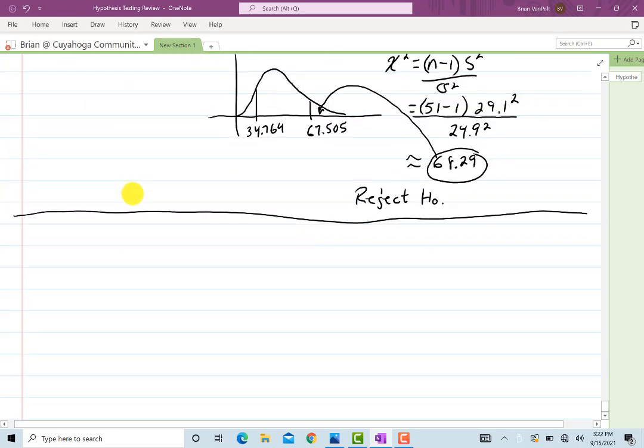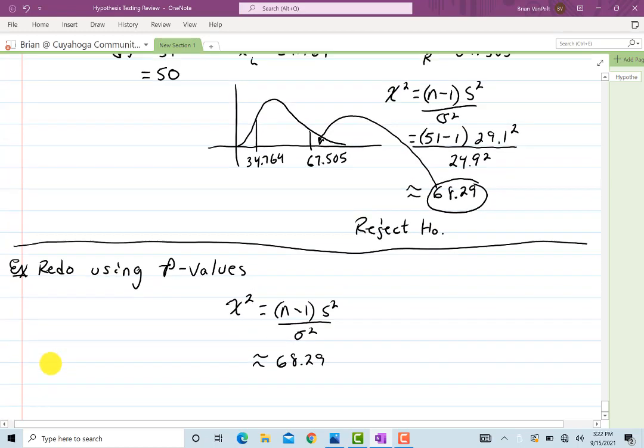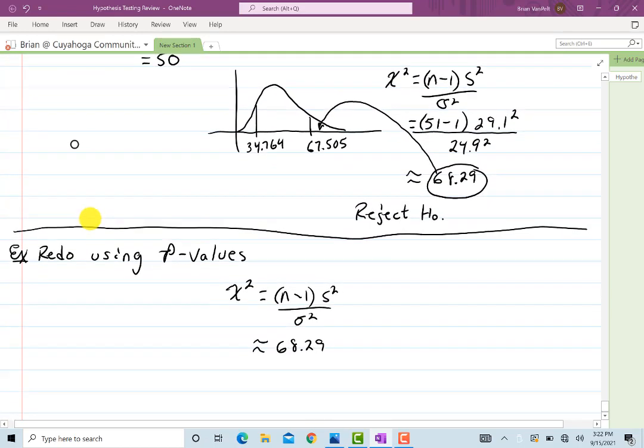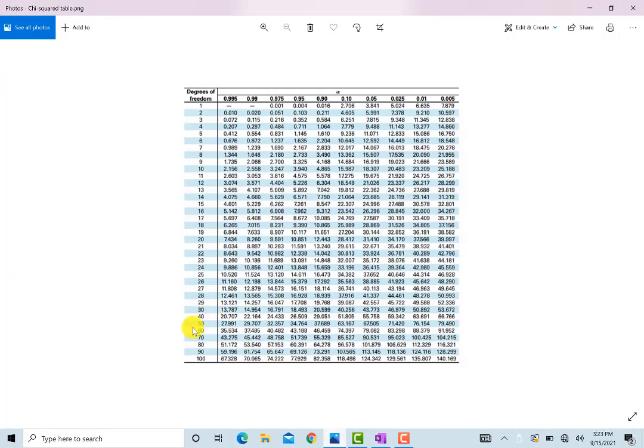And then to finish off this video, let's go ahead and redo the last example with P values. And this way, as you've seen a bunch of times, we calculate that by first calculating the test statistic. And that came out to be 68.29. Now our degrees of freedom is 50. So we're going to use the chi squared table and try to find this number in there if we can. Otherwise, it's going to be between two numbers on the table. Degrees of freedom is 50. And it was 68.29.